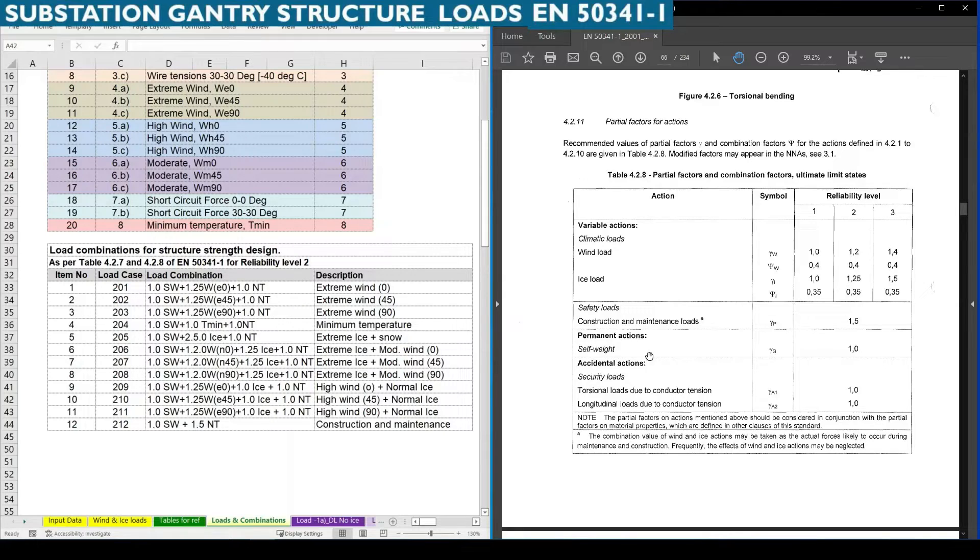For sulphate we need to consider only the factor as 1.0, so that we are considering here sulphate is SW. And for wind for reliability level 2 it is 1.2.